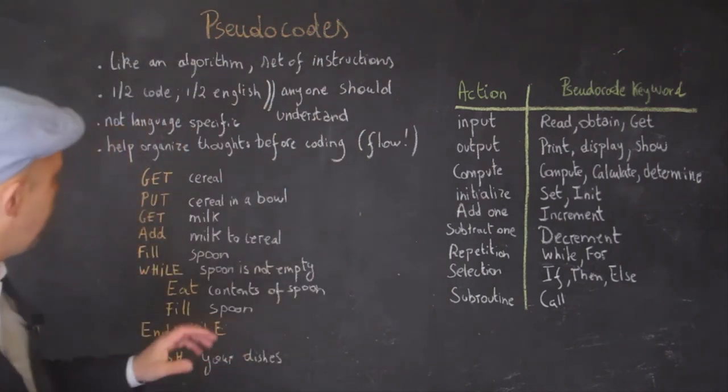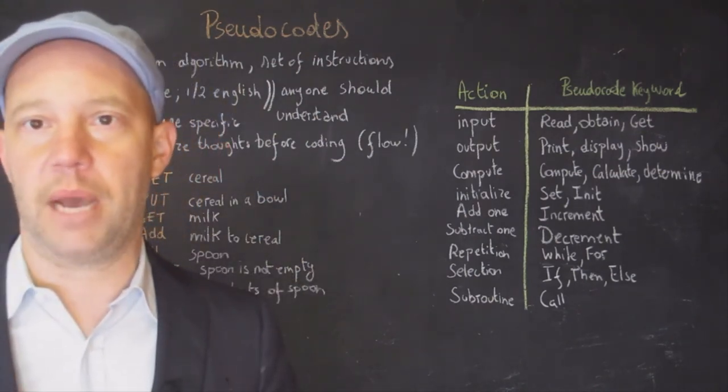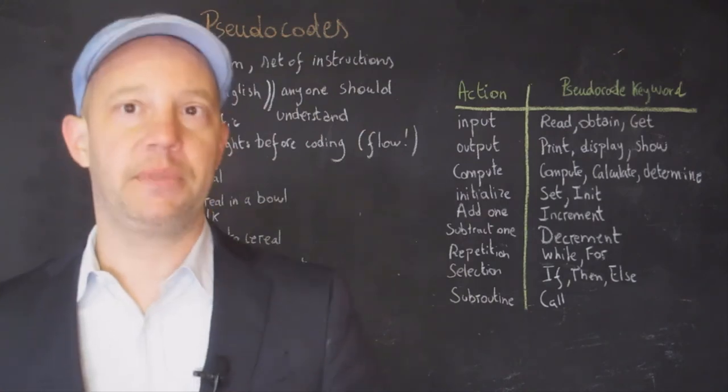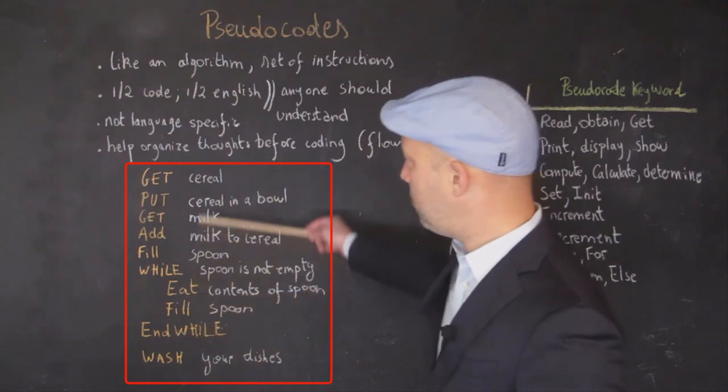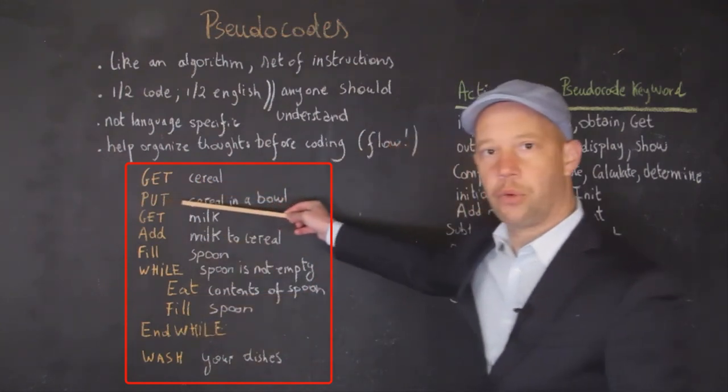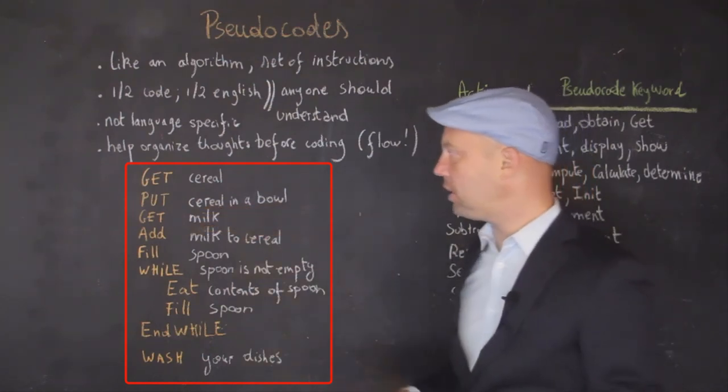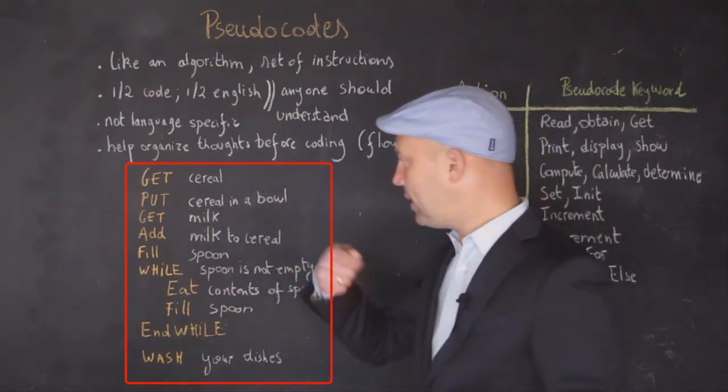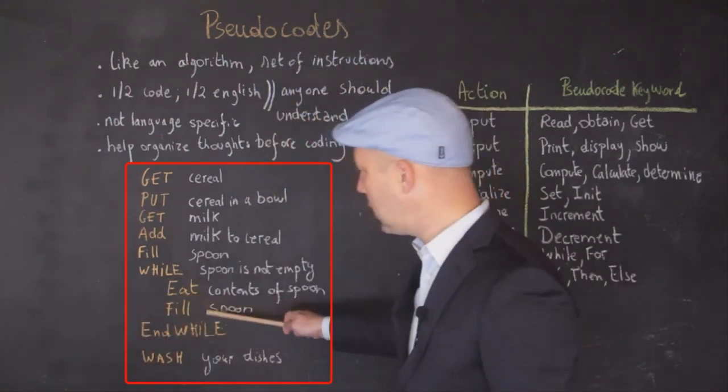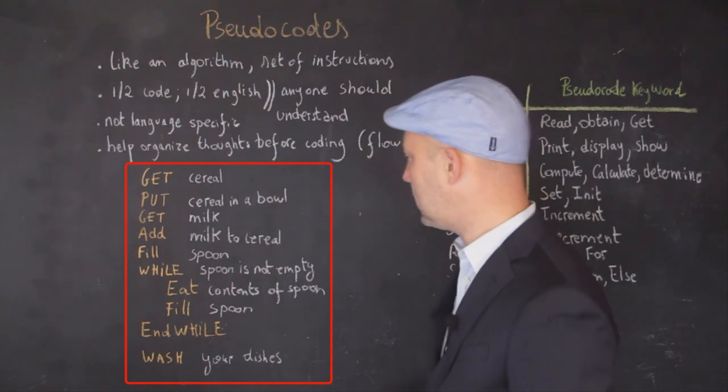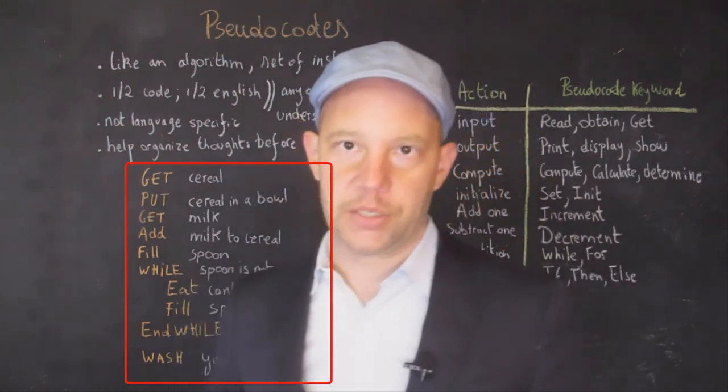So, let's take a simple example here of a day-to-day activity. Like when I want to eat some cereals, for instance, what do I need to do? Well, we can see here. So, first we want to get the cereals. Next, we want to put the cereals in a bowl. Then we want to get the milk. Then we add the milk to the cereal. Then we fill a spoon. And then we're going to repeat this procedure over and over, right? Until the spoon is not empty. And then at the end, you would essentially, hopefully, wash your dishes. Now, you can see here, those are a set of specific instructions.